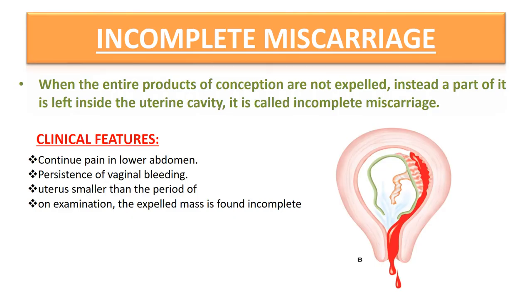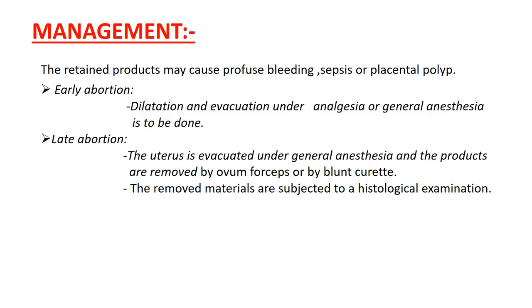Incomplete miscarriage occurs when the entire products of conception are not expelled; instead, a part is left inside the uterine cavity. Clinical features include expulsion of a fleshy mass per vaginum followed by continuation of pain in the lower abdomen, persistence of vaginal bleeding, and on internal examination, the uterus is smaller than the period of amenorrhea and the expelled mass is found to be incomplete. Management: the retained product may cause profuse bleeding, sepsis, and placental polyp, so evacuation of retained products of conception (ERPC) is done.